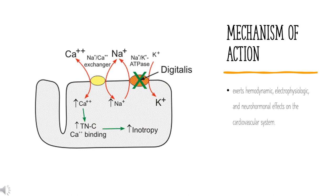Regarding mechanism of action: digoxin exerts hemodynamic, electrophysiologic, and neurohormonal effects on the cardiovascular system. It reversibly inhibits the Na/K-ATPase enzyme, which functions to maintain the intracellular environment by regulating the entry and exit of sodium, potassium, and calcium indirectly. Inhibition of this sodium pump increases intracellular sodium and raises calcium levels in the myocardial cells, causing an increased contractile force of the heart. This improves the left ventricular ejection fraction (EF), an important measure of cardiac function.